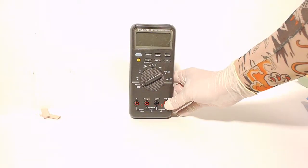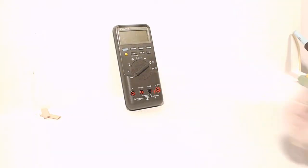Step eighteen. Re-insert the three screws to the back case. Be careful not to overtighten. This concludes our video on the complete breakdown of the Fluke 87 multimeter.